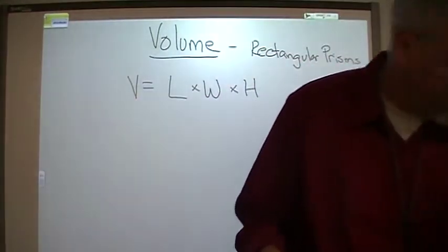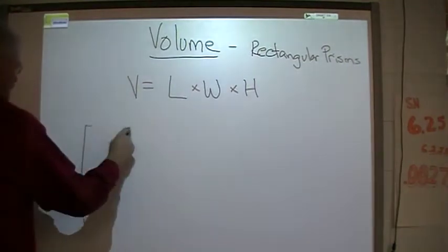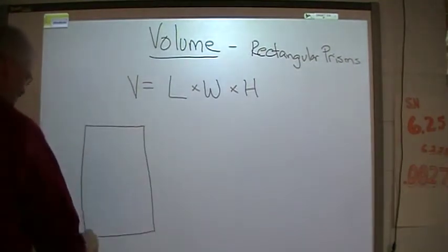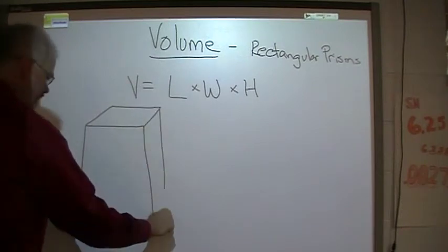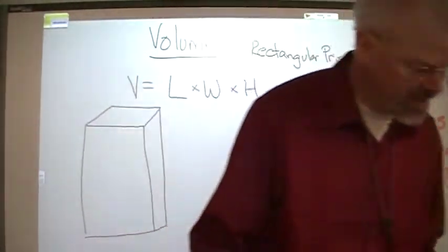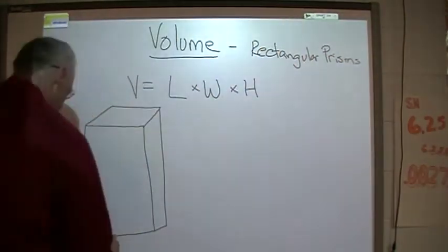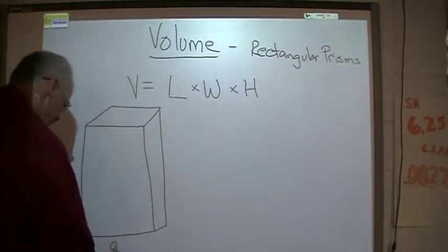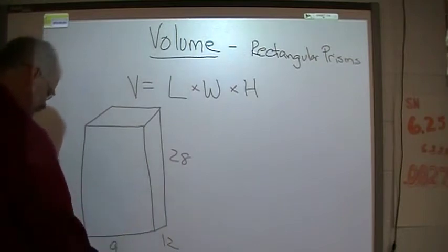Let's do an example here. Let me draw a rectangular prism. There's our rectangular prism. And the measurements are 28, 12, and 9. 9, 12, and 28. I think this is meters.